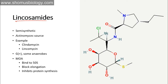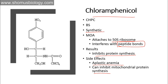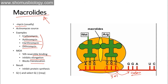Lincosamides are semi-synthetic antibiotics sourced from Actinomyces. Examples include clindamycin and lincomycin. They mostly kill gram-positive bacteria and some are effective against anaerobes. Their mode of action is binding to the 50s subunit and blocking the elongation process, inhibiting protein synthesis — the same step blocked by macrolides. Elongation involves two steps: peptide bond formation, which is prevented by chloramphenicol, and translocation, which is prevented by macrolides and lincosamides.